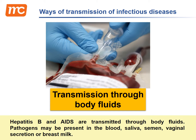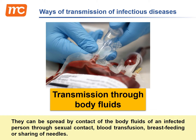Hepatitis B and AIDS are transmitted through body fluids. Pathogens may be present in the blood, saliva, semen, vaginal secretion, or breast milk. They can be spread by contact with the body fluids of an infected person through sexual contact, blood transfusion, breastfeeding, or sharing of needles.